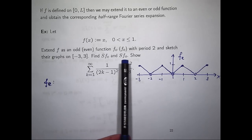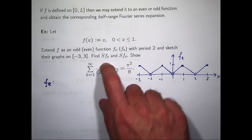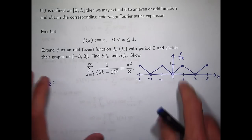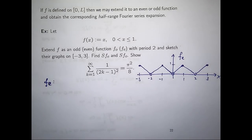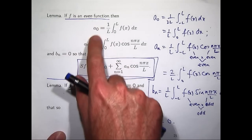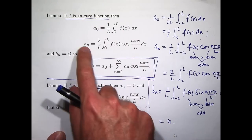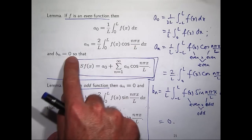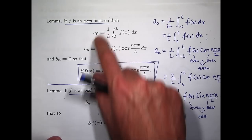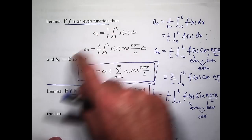Now we're asked to find the Fourier series of f_E. Firstly, we note that this function is an even function. So going back to our lemma: if we have an even function, a₀ is this formula, aₙ is this formula, and the bₙ's are all zero. For this particular example, we only have to do two integrals rather than three.